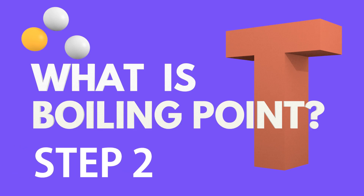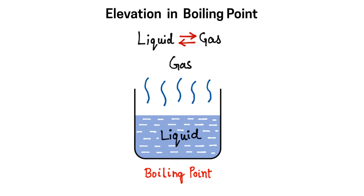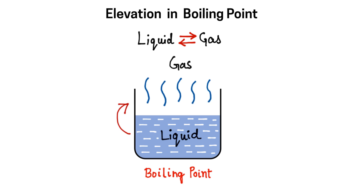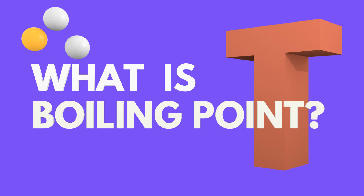Now let's move to the more accurate definition of boiling point. Boiling point is that temperature at which liquid and gas are in equilibrium. As I heat the liquid, it will start creating vapors. And there will be a point at which liquid and gas come to equilibrium — meaning, as much liquid is converting to vapor, that same amount of vapor is also converting back to liquid. So that equilibrium point is called the boiling point.